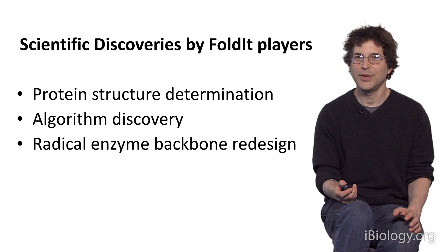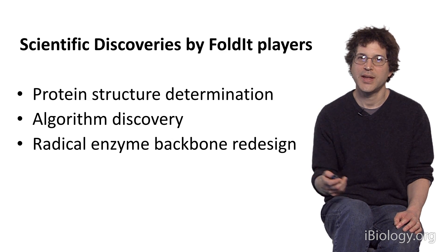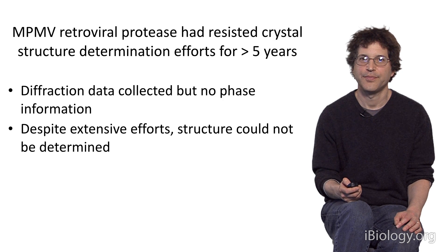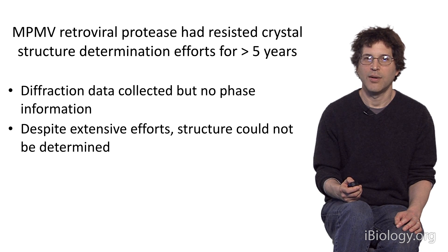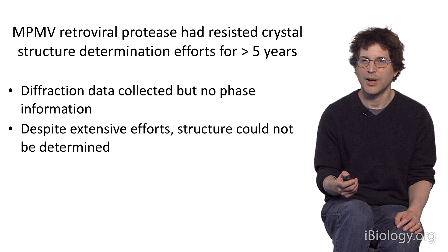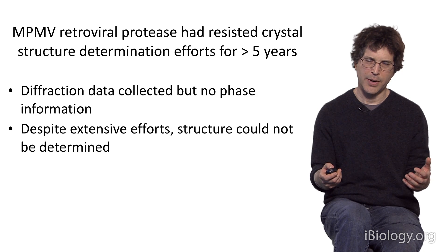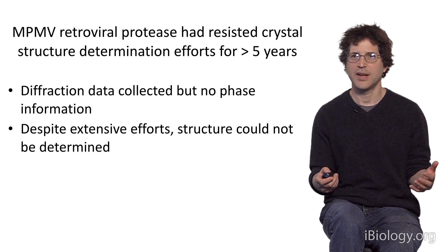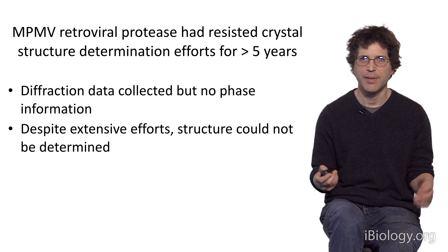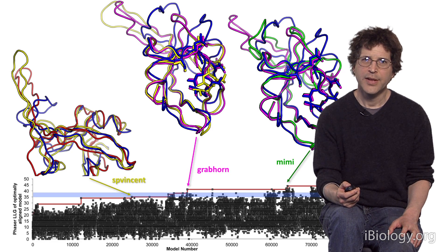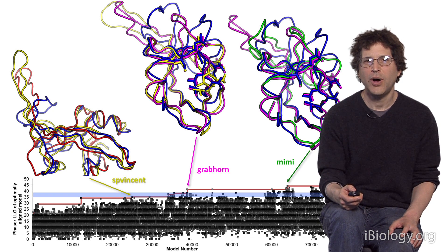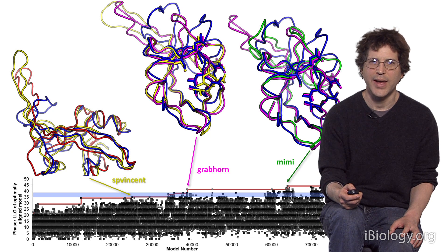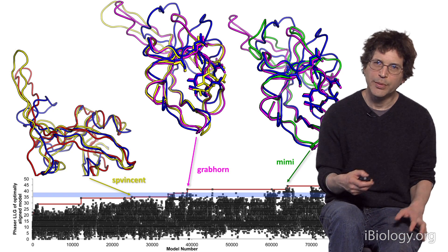Foldit players have made new scientific discoveries, and I'll describe several of these. The first discovery concerns determining the structure of a protein from a retrovirus protease related to HIV. This is a case where the experimentalists had collected experimental data but weren't able to solve the structure because they were missing some key pieces of information. We set this up as a Foldit puzzle, and the puzzle started with a model which we knew was in the ballpark but certainly wasn't the correct structure — shown in red on the left. Foldit players form teams and collaborate very closely.